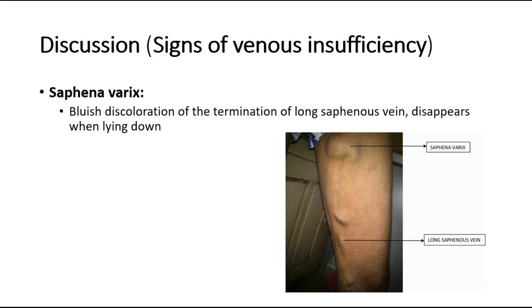For discussion, the signs of venous insufficiency visible on examination include: saphena varix, which is a bluish discoloration at the termination of the long saphenous vein that usually disappears when lying down. The picture shows the long saphenous vein and the saphena varix — the bulging at the upper thigh.